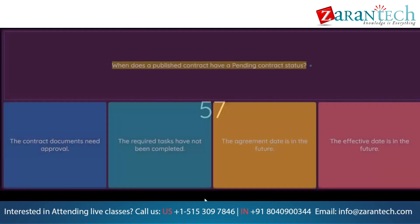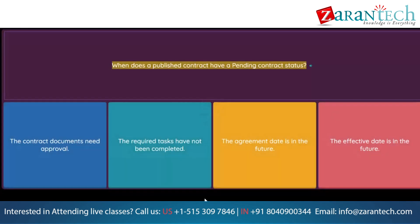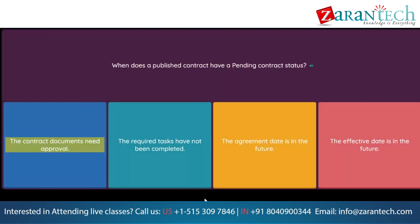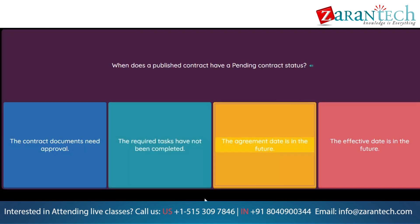Question: When does a published contract have a pending contract status? Option 1: The contract documents need approval. Option 2: The required tasks have not been completed. Option 3: The agreement date is in the future. Option 4: The effective date is in the future.